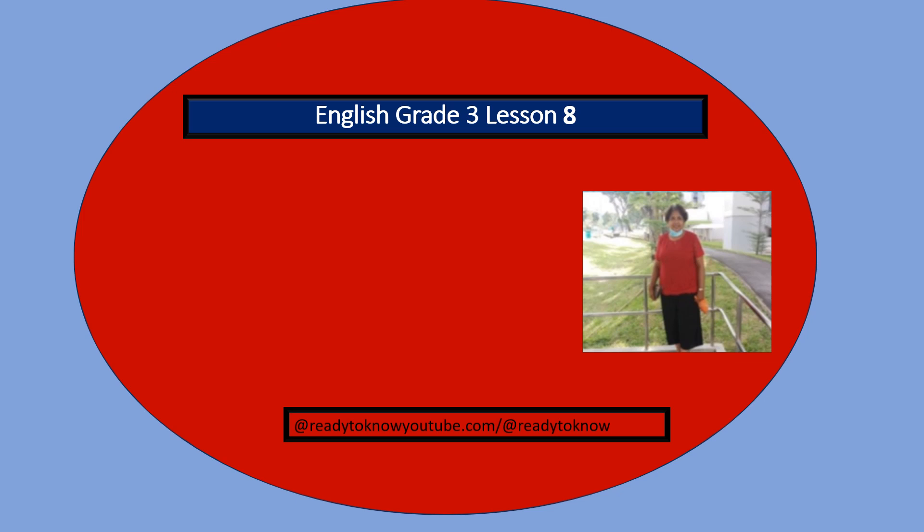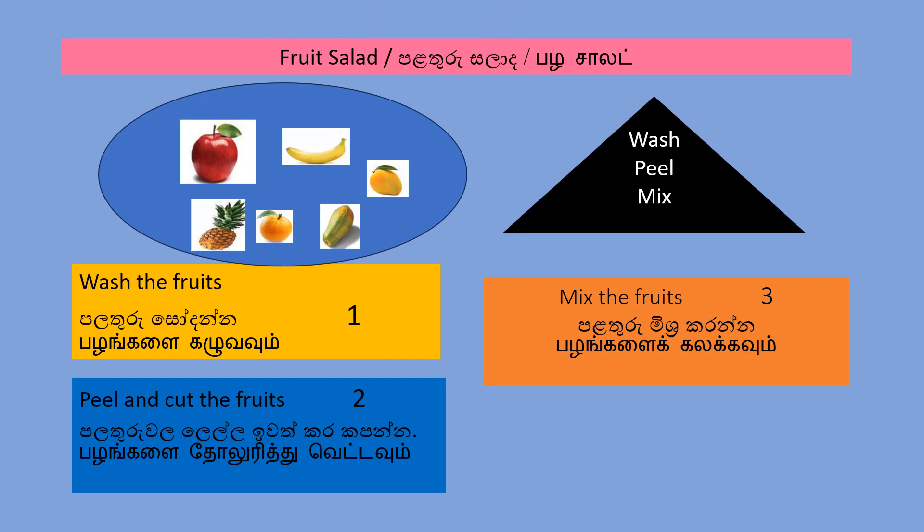English Grade 3, Lesson 8: Fruit Salad. First, wash the fruits. Two, peel and cut the fruits. Three, mix the fruits.